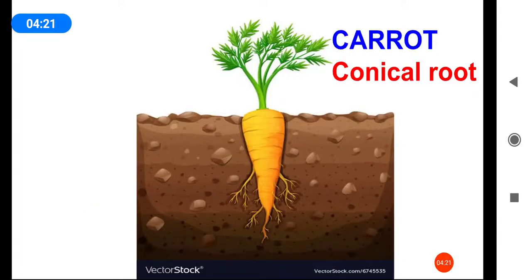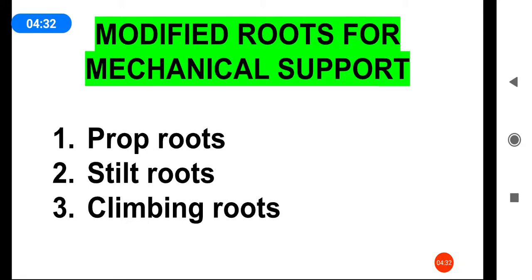Next, carrot. Carrot is cone-shaped, conical in shape, so they are called conical-shaped roots. The next function of the root is mechanical support. Some plants need additional support, so roots of these plants grow downward and act as supportive organs. There are three types of modified roots for support: prop roots, stilt roots, and climbing roots.